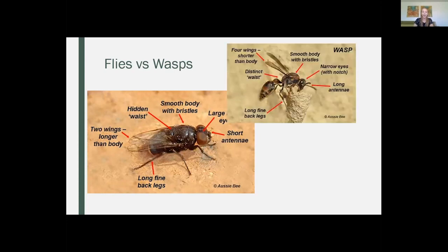But in general for wasps, you'll look for more narrow eyes, longer antennae. They'll generally have a smooth, slim body with a fairly tiny little waist. So those are some good ways you can tell them apart. Wasps, when they're flying, will also tend to dangle their legs a little bit.